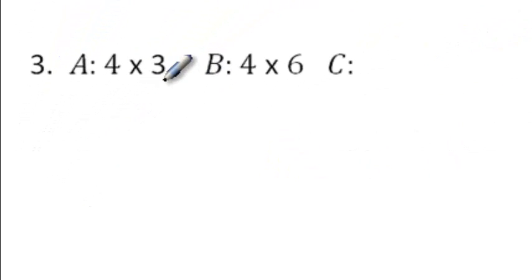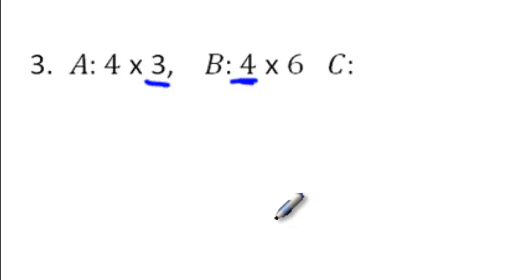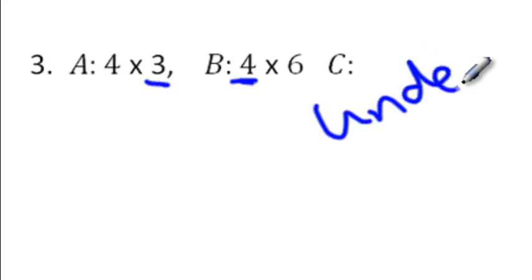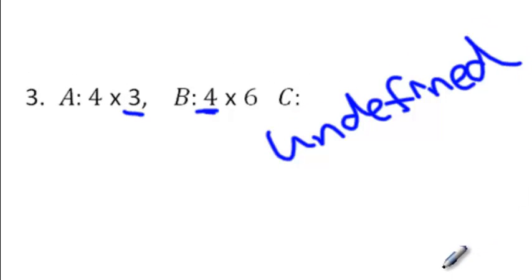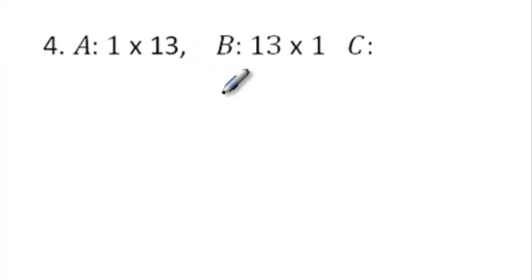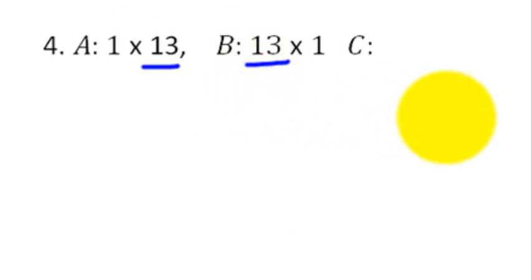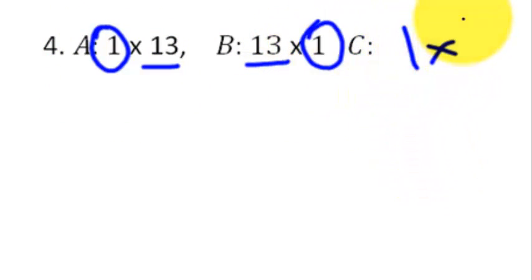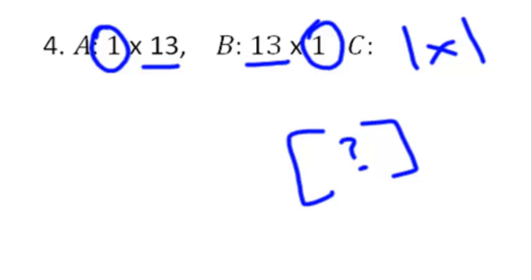Number three: we check the inside — there's a three and there's a four. Those numbers do not match up. Therefore, we cannot multiply matrix A and B together. It's not possible, so what we would say is that this is undefined. There's nothing else to do, because you cannot multiply them. The last one: we have a 1 by 13 and a 13 by 1. When we multiply those together, it is possible because those middle numbers are the same. Our answer would be the rows of the first and columns of the second — so this is just a 1 by 1 matrix, which is just one number.